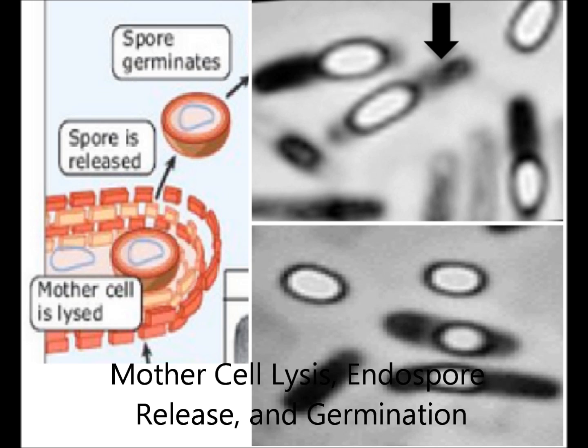Once the endospore has matured, the mother cell lyses and the endospore is released. When conditions become favorable, the endospore goes on to germinate, producing new vegetative cells.